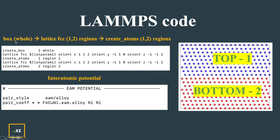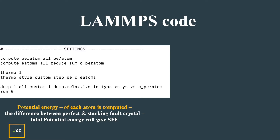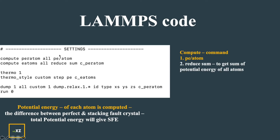You can see I create the box, lattice, and then create atoms. Now I create the compute: the potential energy of each atom is computed, and the difference between the perfect and stacking fault crystal total potential energy gives the stacking fault energy. I use compute potential per atom, then reduce sum and store the result in the variable E_atoms, which is the energy of the total number of atoms.